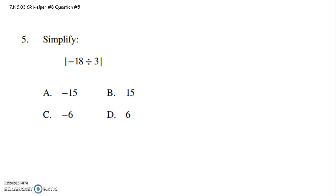All right, seventh graders, this is to help you with question 5 on CR8. It says simplify, and then within an absolute value, they give you negative 18 divided by 3.